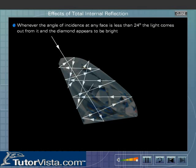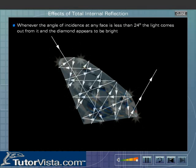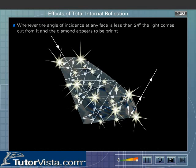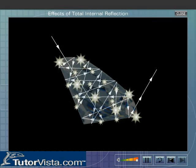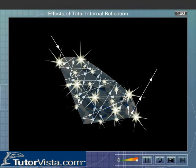Whenever the angle of incidence at any face is less than 24 degrees, the light comes out from it and the diamond appears to be bright. Thus, a ray of light on entering a cut diamond literally gets trapped within it for some time and causes it to sparkle.